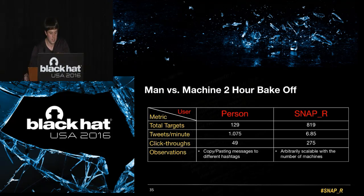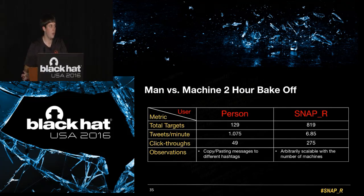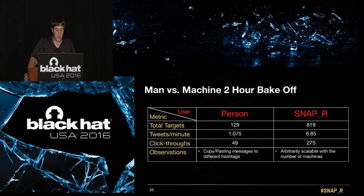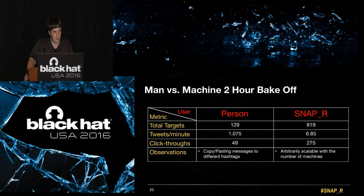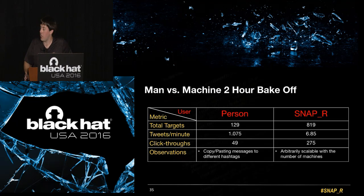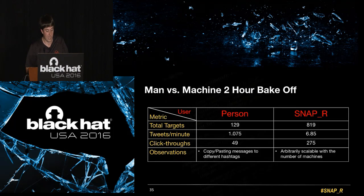Later, we stress-tested the tool to see whether it was actually better than a human at phishing. We had a bake-off: a person generated phishing tweets by copying and pasting messages to different hashtags. In two hours he was able to target 129 people — 1.075 tweets per minute — and got 49 click-throughs. With one instance of Snapper, we were able to target 819 people in that same two hours — 6.85 tweets per minute — and got a total of 275 click-throughs. Furthermore, with Snapper you can arbitrarily scale it to the number of machines you have, so just one instance outperforming a human is pretty significant.